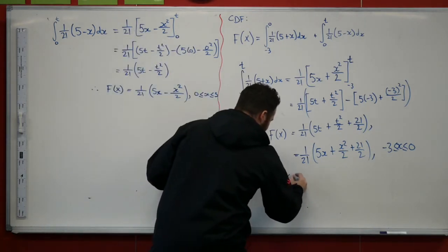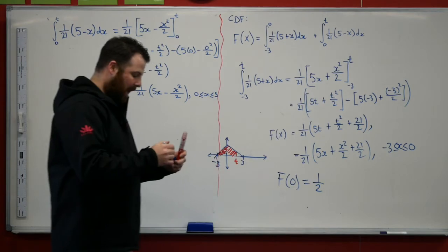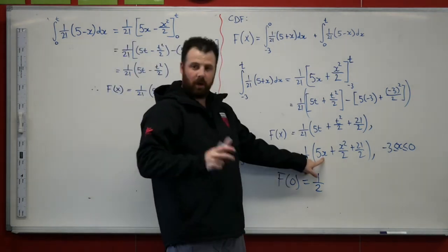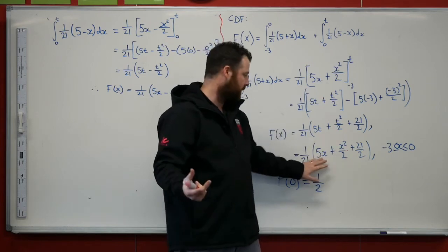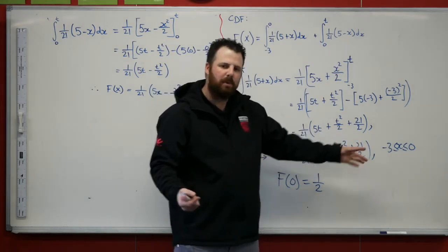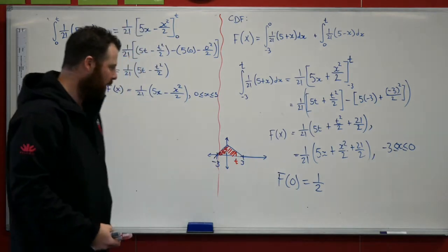Well, f of 0 is going to equal half. 5 times 0? 0. x squared? Well, 0 squared? 0. So that's all 0. I have 1 on 21 times 21 on 2. It gives me a value of a half.